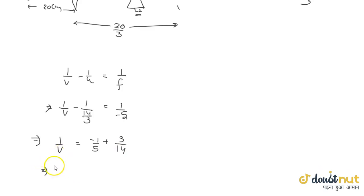Let us solve this. 1 upon v will be minus 1 upon 5 plus 3 upon 14. Solving further, 1 upon v is equal to minus 14 plus 15 upon 70, which becomes 1 by 70. So v is 70 cm.